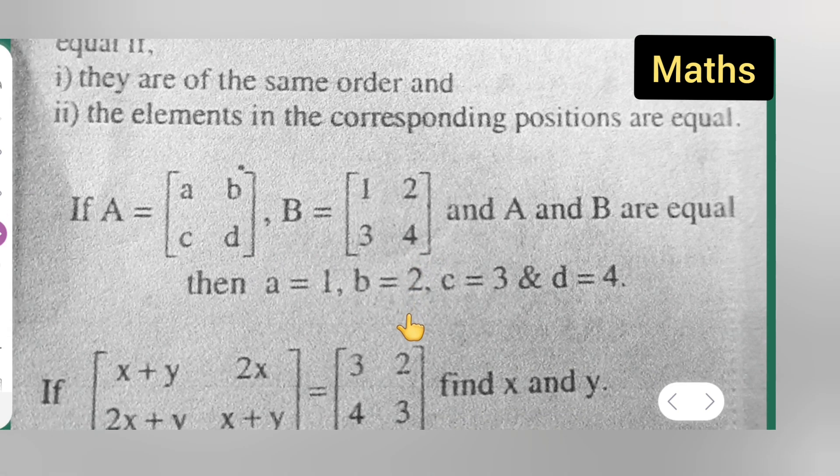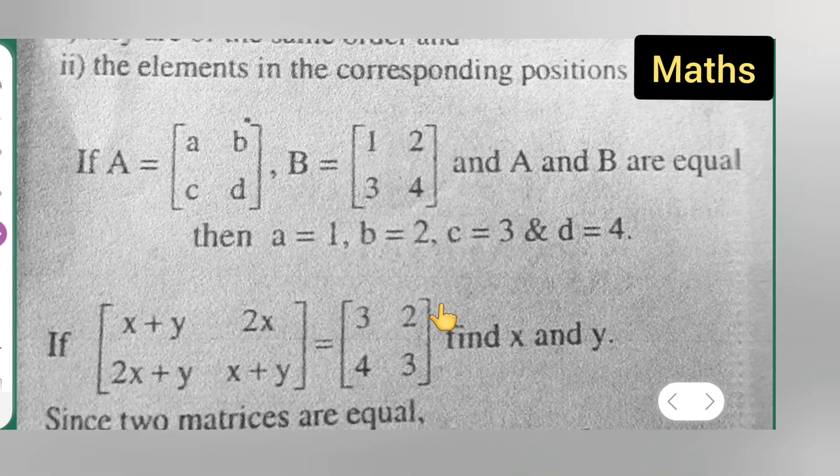Now what is the value? a is 1, b is 2, c is 3, and d is 4. Next, what I'll have to do is, if you take a matrix x plus y here, 2x, 2x plus y, and here x plus y.